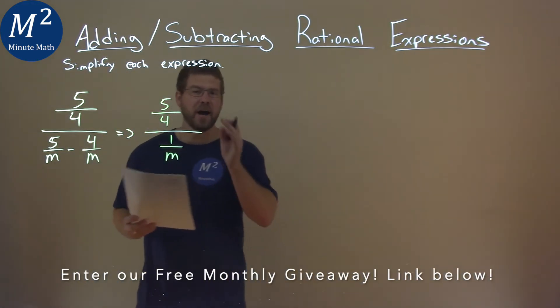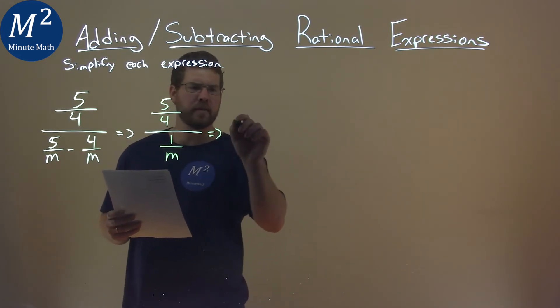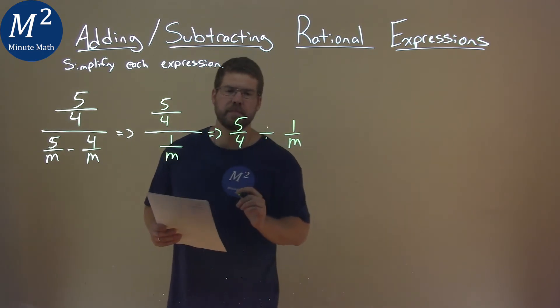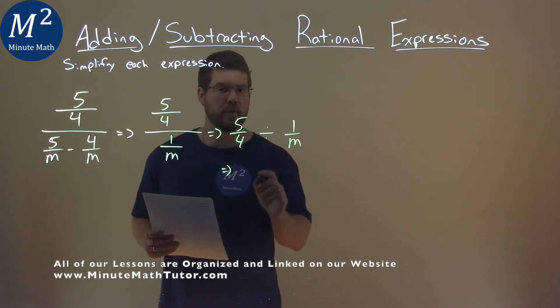So now we have 5 fourths divided by 1 over m. Let's go write it like this, 5 fourths divided by 1 over m. And we know what division here is the same as multiplication if we flip the fraction.